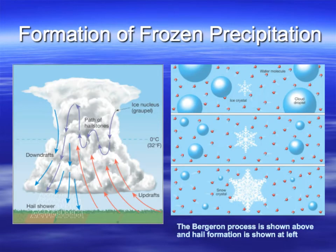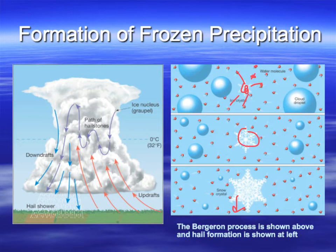So in the Bergeron process: you have a small ice crystal and water molecules still in the liquid supercooled state. As they come in contact with the ice crystal, the crystal grows. When that snowflake is large enough it begins to drop, then melts, and reaches the surface as rain.